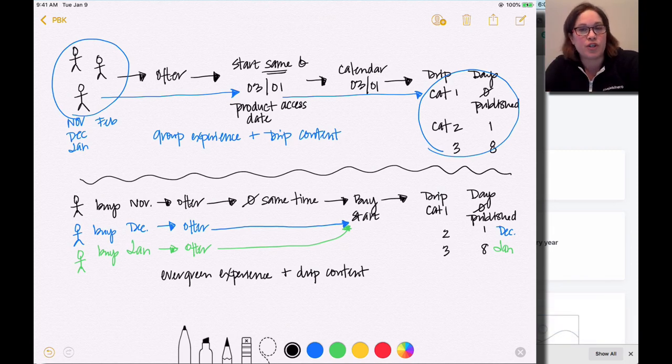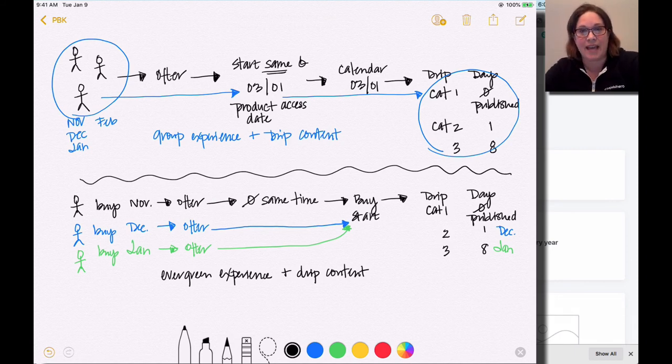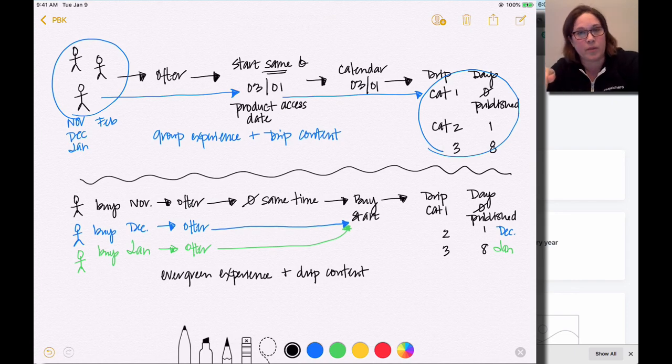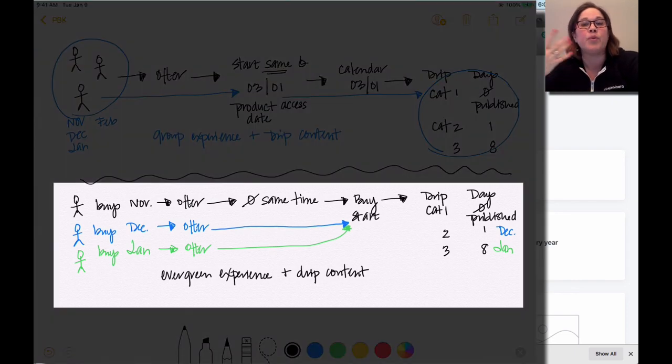Once that March 1st date hits, then it will drip and they will stay together. If I'm doing the evergreen experience plus drip content and I'm pre-selling, so I want to pre-sell my course, I can do that.